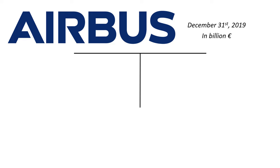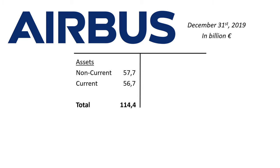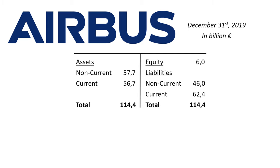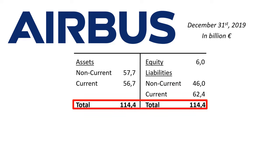Non-current assets: 57.7 billion. Current assets: 56.7 billion, adding up to total assets of 114.4 billion. Equity: 6 billion. Non-current liabilities: 46 billion. Current liabilities: 62.4 billion. The total amount owned equals the total amount owed. Per the accounting equation, assets equal equity plus liabilities.